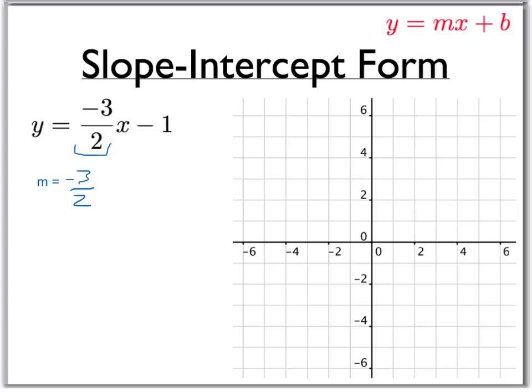Now remember, slope is rise over run. And so what that means in this case is a negative 3 means we'll rise negative 3. In other words, we'll go down 3 and to the right 2.